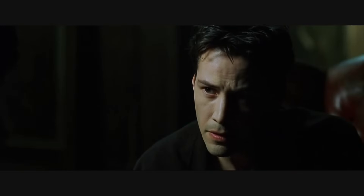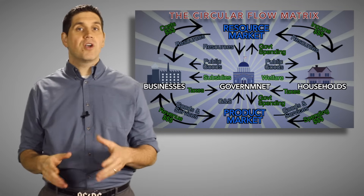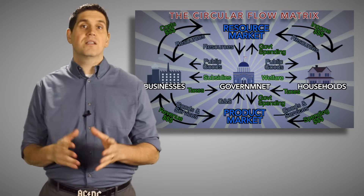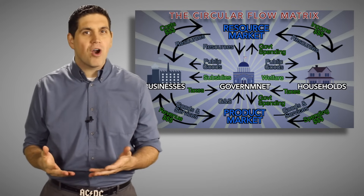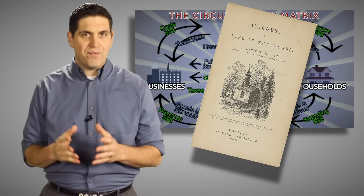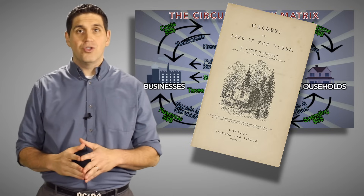One final thought. In the movie, the matrix enslaves people. Many people wonder if capitalism — and this hamster wheel of constantly spending and earning and spending and earning — enslaves people. Now would your life be better off if you pulled a Thoreau and just lived out in the woods? I don't know, but what I do know is there's a lot of things you'd have to live without. First, there'd be no cell phones or computers, so say goodbye to YouTube. And also there'd be no modern medicine or hospitals. It would be nice if none of us had to work, but there's a trade-off to that. So does the matrix enslave us or liberate us? Let me know in the comments below.